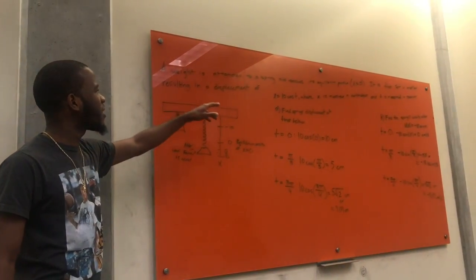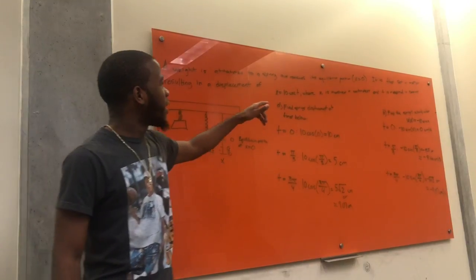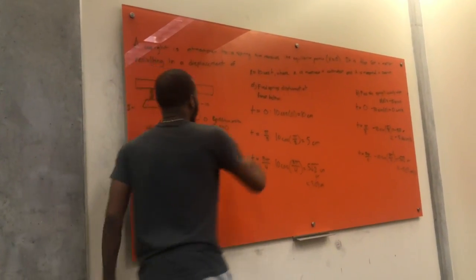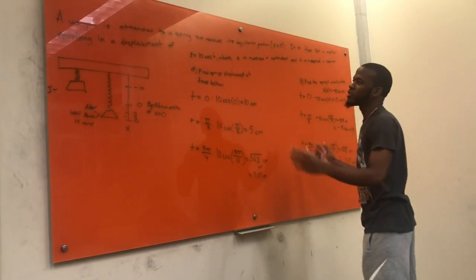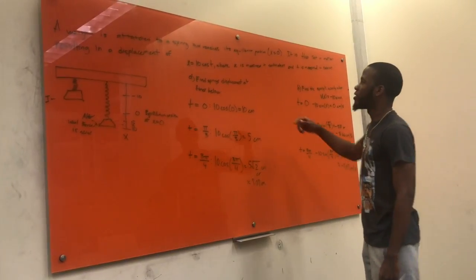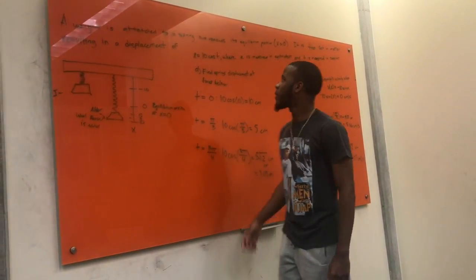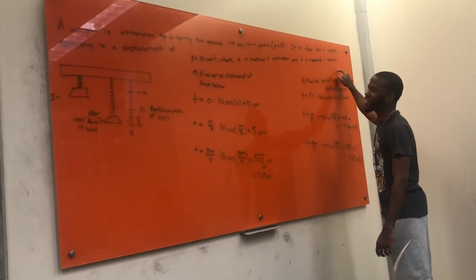It's saying the weight is attached to a spring and reaches its equilibrium position at x equals zero. It is then set in motion, resulting in the displacement of x equals 10 cosine t. This is the initial position that the spring is in. This is where it displaces initially after the first initial force is added to it. Then it's saying x is measured in centimeters and t is measured in seconds.